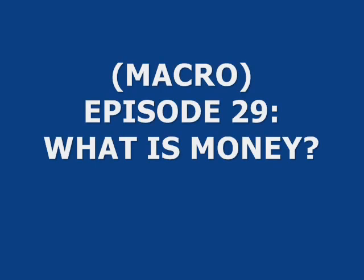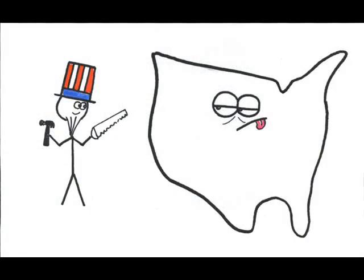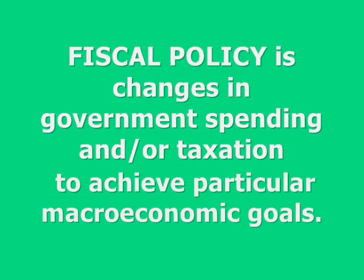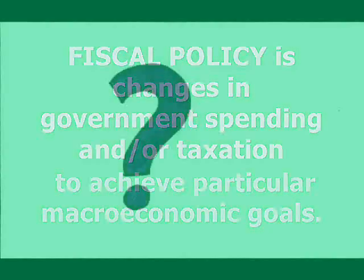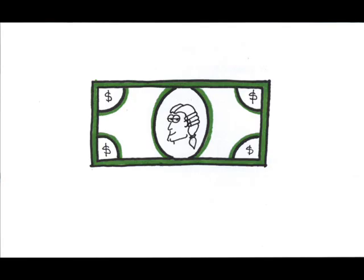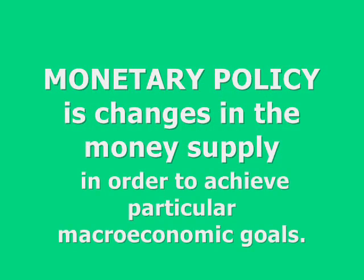If you're an economist who believes in an active role for the government in managing the economy, then you know that fiscal policy — changes in government spending and/or taxation to achieve particular macroeconomic goals — is one type of tool you can use. But did you know that you can stimulate or slow spending by increasing or decreasing the amount of money that's available? By definition, monetary policy is changes to the money supply in order to achieve particular macroeconomic goals.